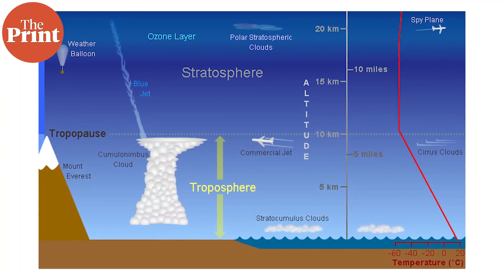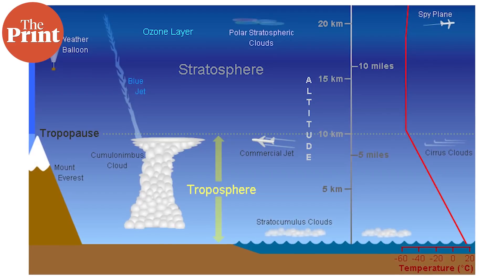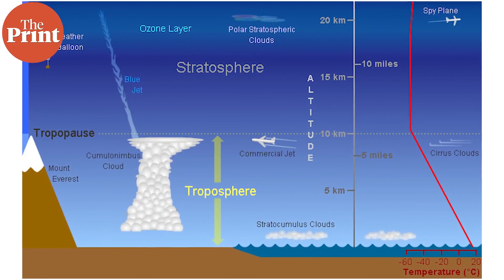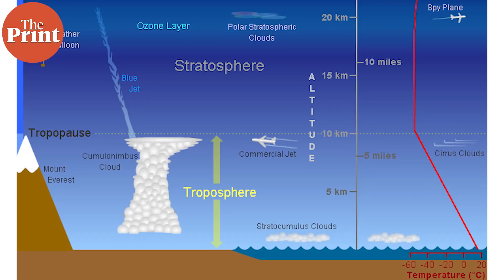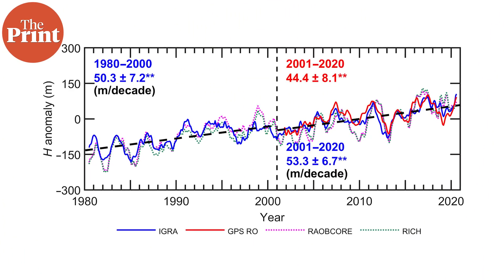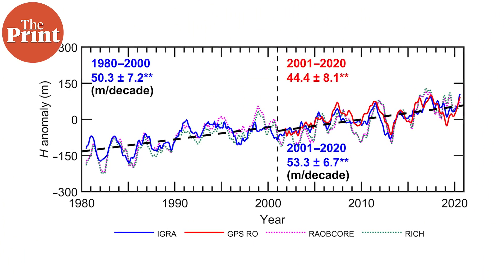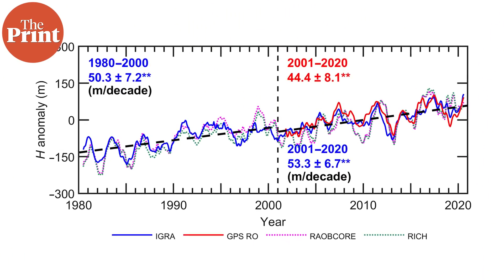The troposphere is where we do all of our weather-related research with weather balloons and other equipment, making it a critical part of our understanding of climate processes. We've known that above the equator the tropopause begins at about 18 kilometers, and above the poles it starts a little lower at 10 kilometers. But now Canadian researchers have found that the height of the tropopause has been continuously going up in the northern hemisphere over the last half century.